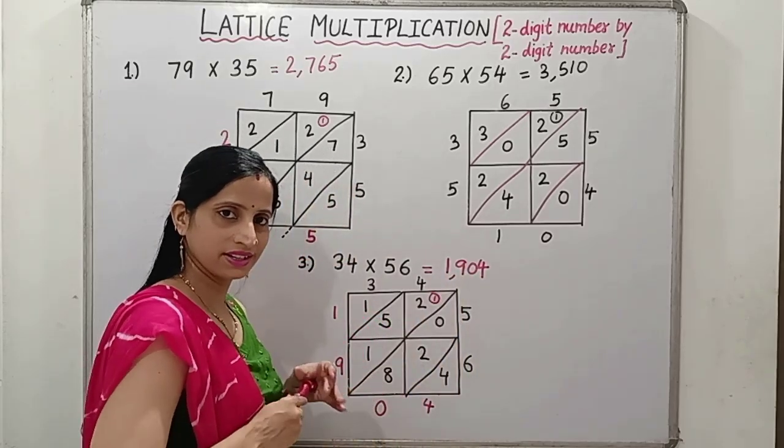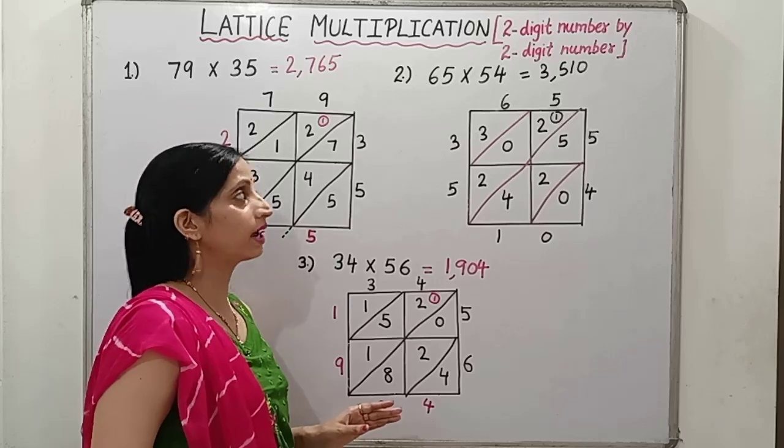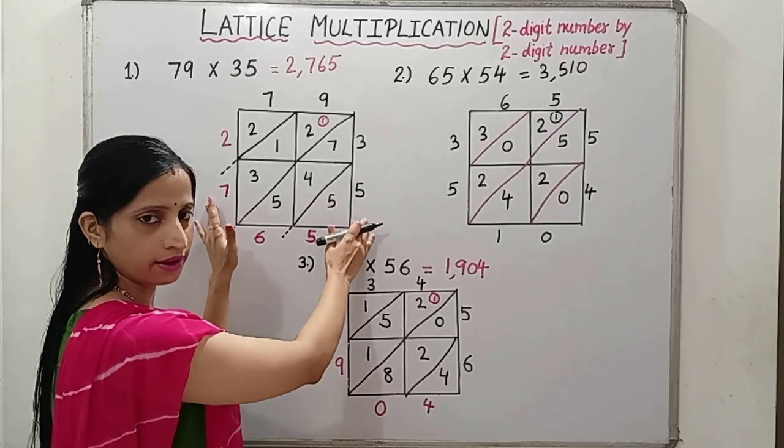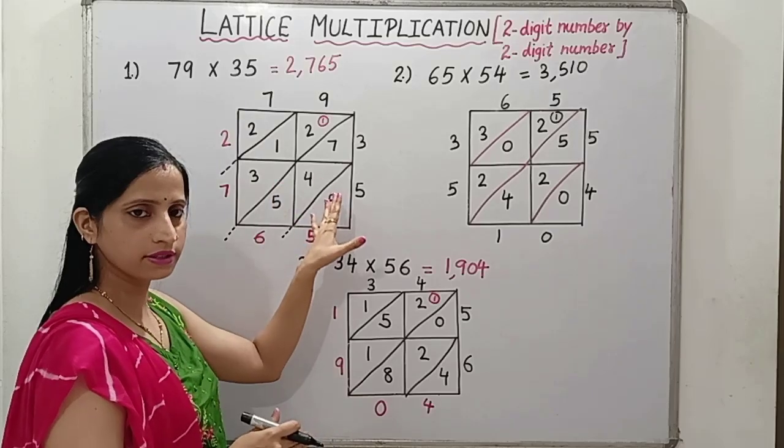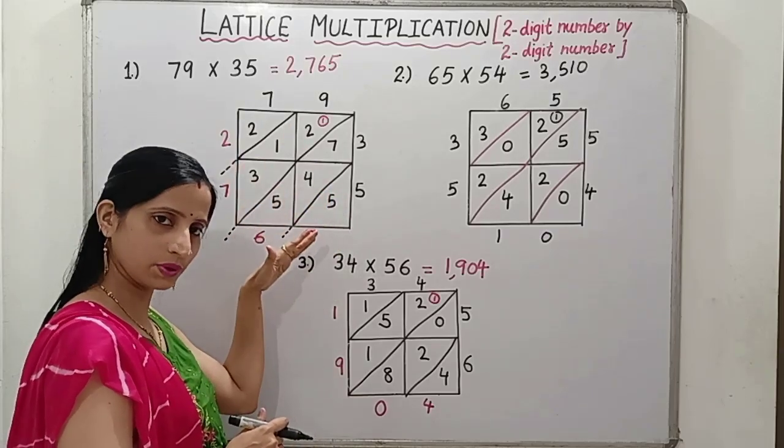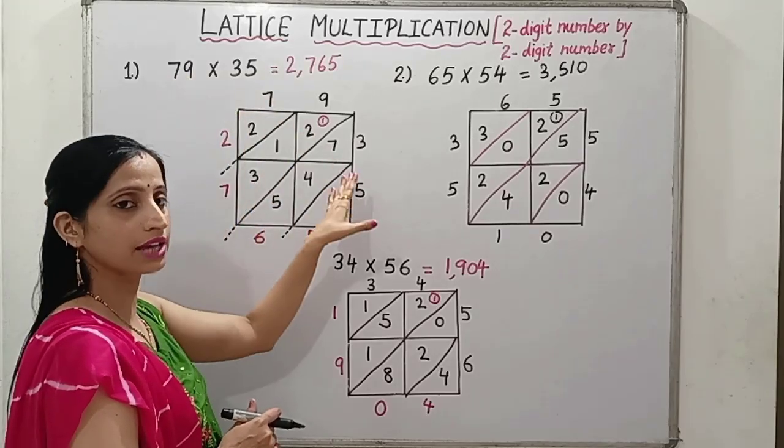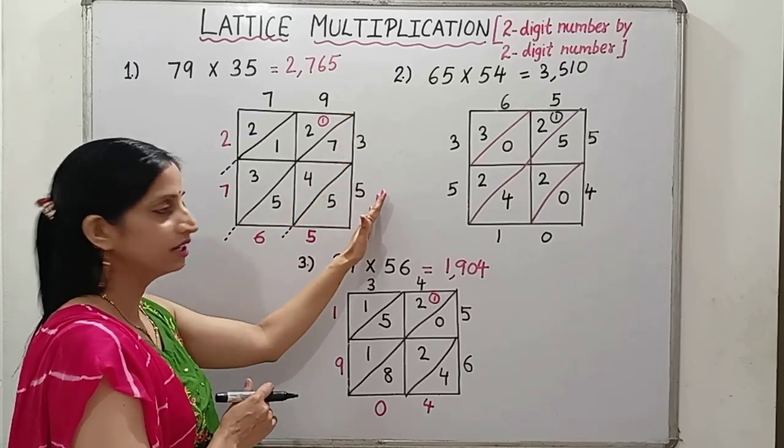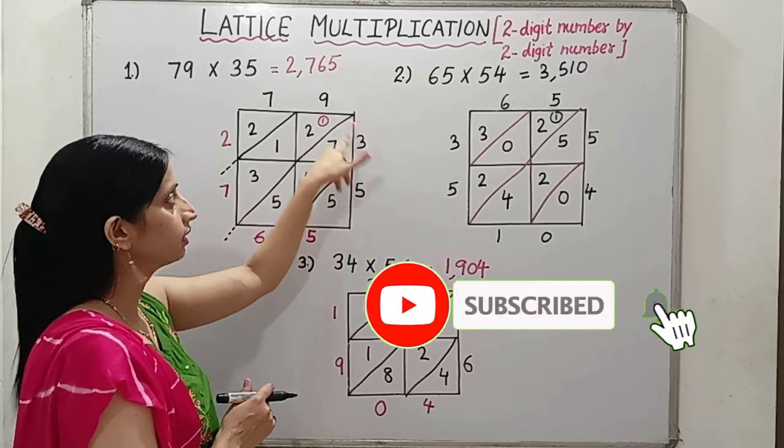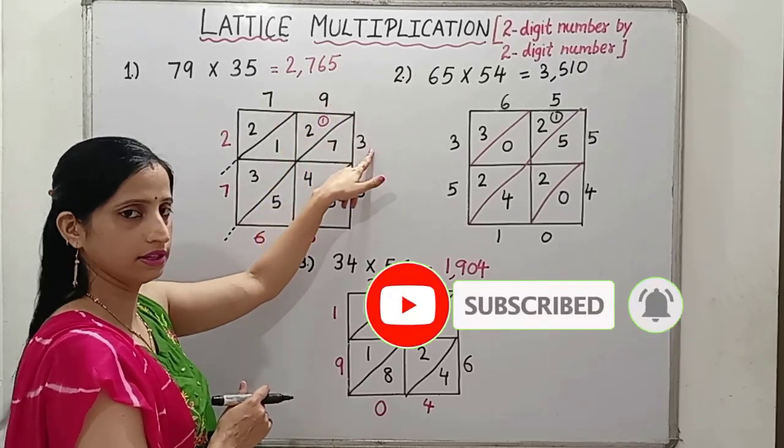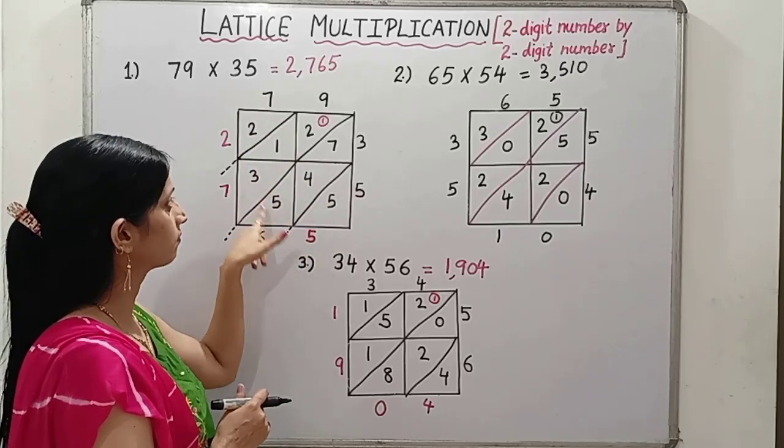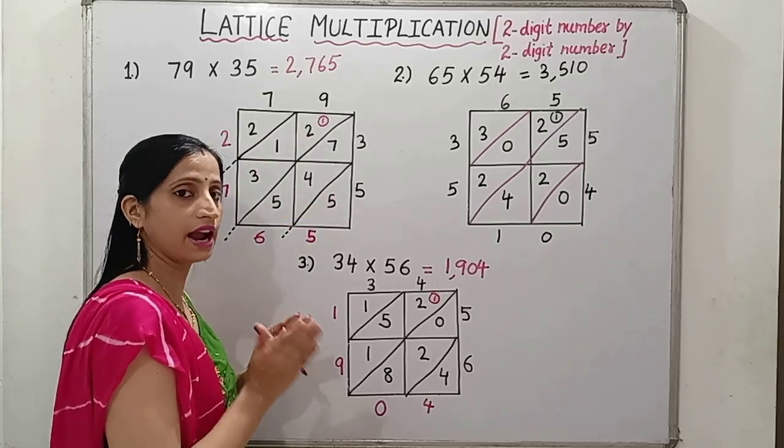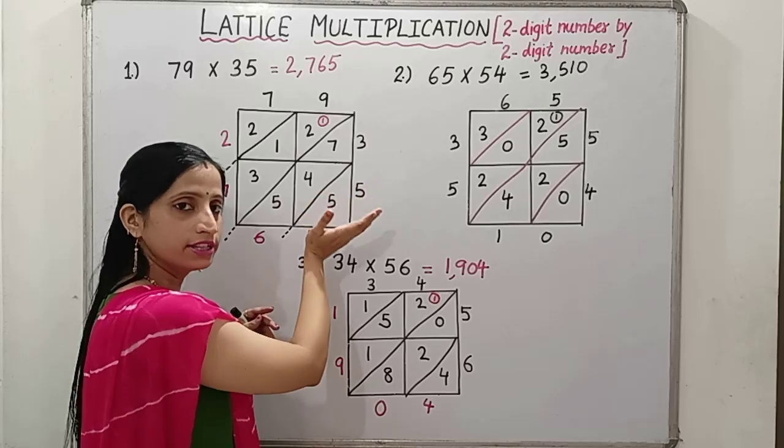This was all about how to multiply our given 2-digit number by 2-digit numbers by lattice multiplication. It is very easy. Firstly, draw a square, divide it in 4 equal parts. Then draw the diagonals. Write the given numbers on the sides of the square. On one side you can write one number, and another side you can write another number. Then start multiplying this first number by this, then the second digit of the same number by this. Similarly, this and this. Then add the numbers diagonally. But always start adding from right hand side, from below, from one's place.